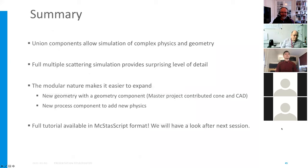So in summary, the union components clearly allow the simulation of very complex physics and geometry within a normal McStas instrument. And this full multiple scattering simulation provides a surprising level of detail by just having very simple physics and geometry made from just simple shapes. And it's very easy to expand on this because it's also modular. Normally when you want to make something new in McStas you need to have both the physics and the geometry. Here you can just make one or the other. And even when you add new physics, you can still get incoherent and single crystal on top of that without having to worry about these things because they can be added together. So I hope that this will expand the library of McStas samples significantly.